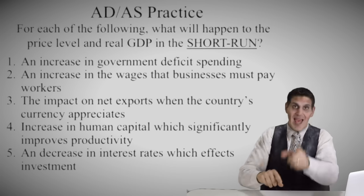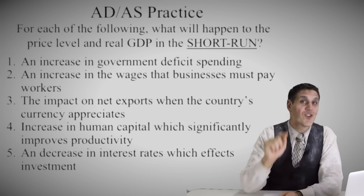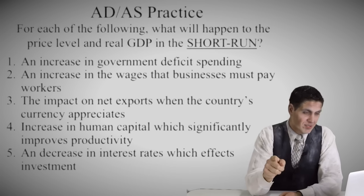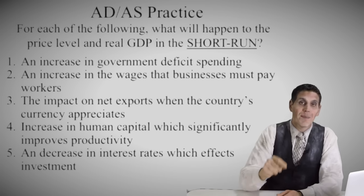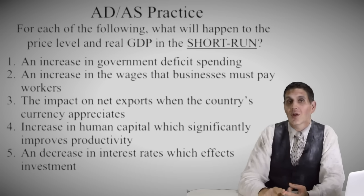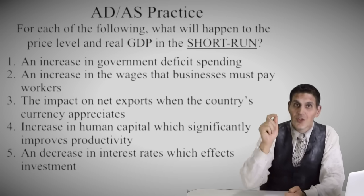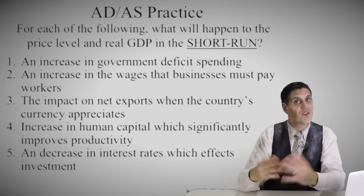Now you know what to watch out for when looking at test questions — there are general questions that hopefully you won't see, and there are very specific questions that only have one right answer. It's time to practice to see if you can actually do this. There are five scenarios: for each one, what'll happen to the price level and real GDP in the short run? If you need to draw the graph, draw the graph. Good luck.